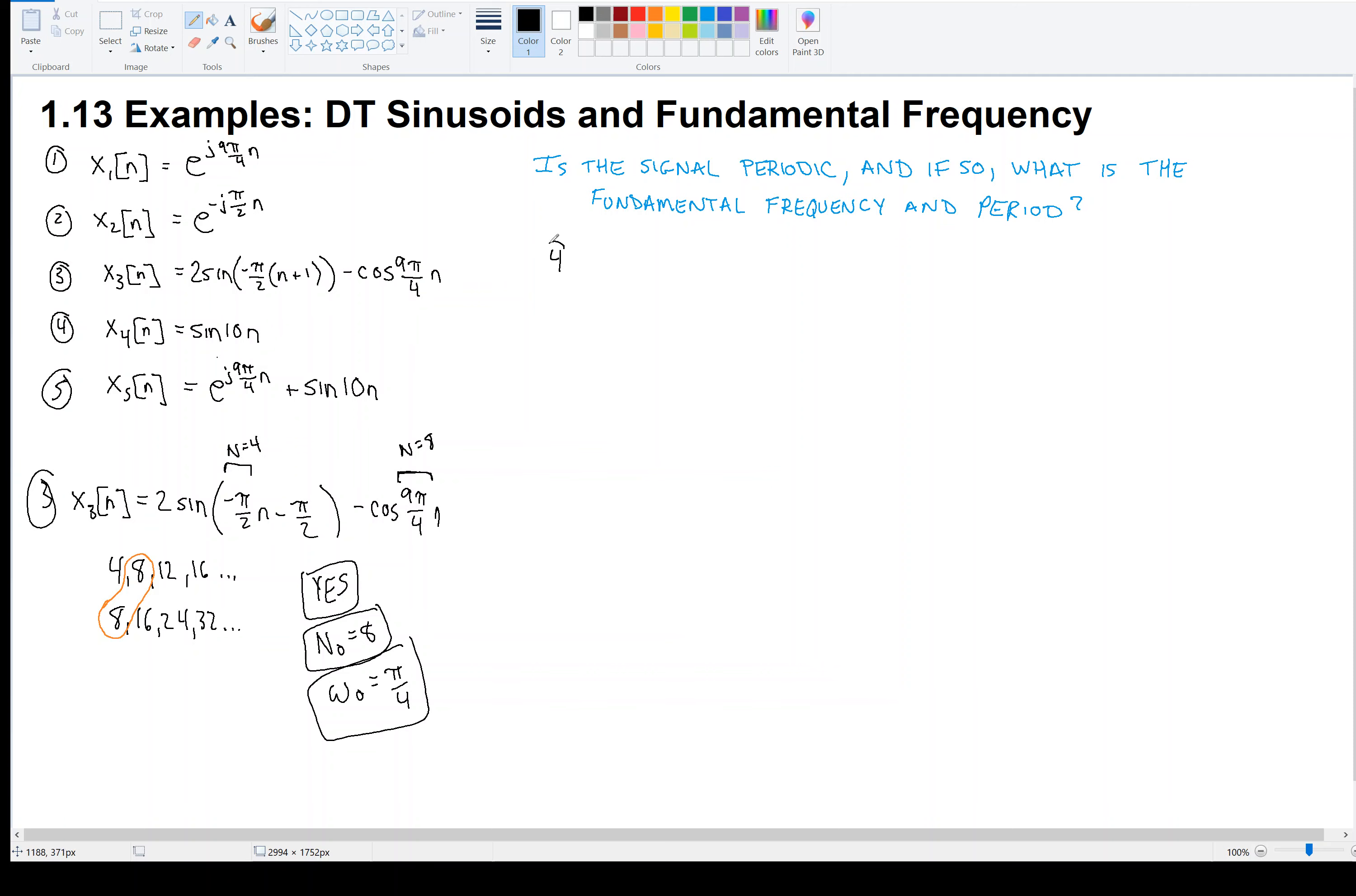Example 4: sine of 10n. From inspection, we think that maybe the frequency is 10, because that's what's multiplying the independent variable. So if that's going to be the frequency, then I have to find some k times 2π over some integer n₀, such that this is true. So the question is, can I do that? Notice k and n₀ have to be integers, and so there's nothing here to cancel the π this time. Nothing here to cancel the π means that there's no way that I'm going to pick integers so that I have 10 on the left. So no, I can't do this. And so we conclude that signal 4 is not periodic.